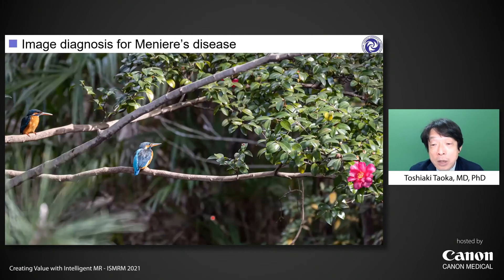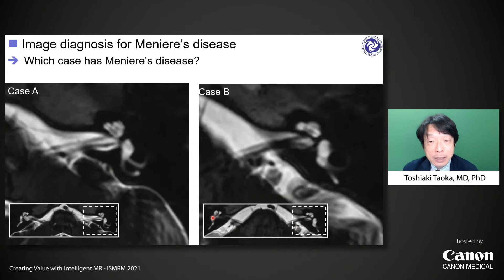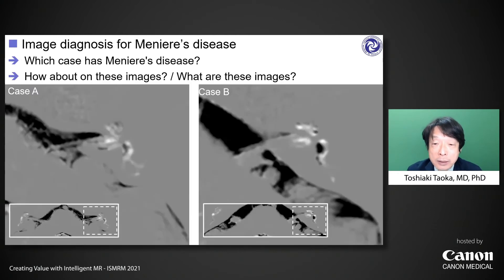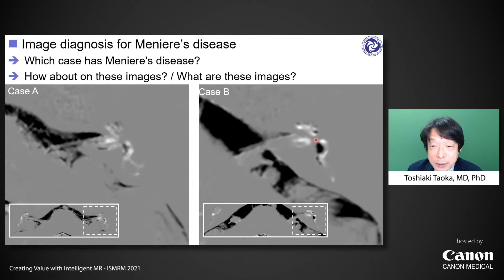I would like to move on to the next topic: image diagnosis for Meniere's disease. Let me ask a question. I will show you MR cisternography of two cases, case A and case B — which case has Meniere's disease? I'm afraid you cannot make the diagnosis on these images; the two cases look quite similar. However, on a different set of images, the two cases look quite different. In case B, we can see a large black area in the vestibulum and also in the cochlea. But what are these images?